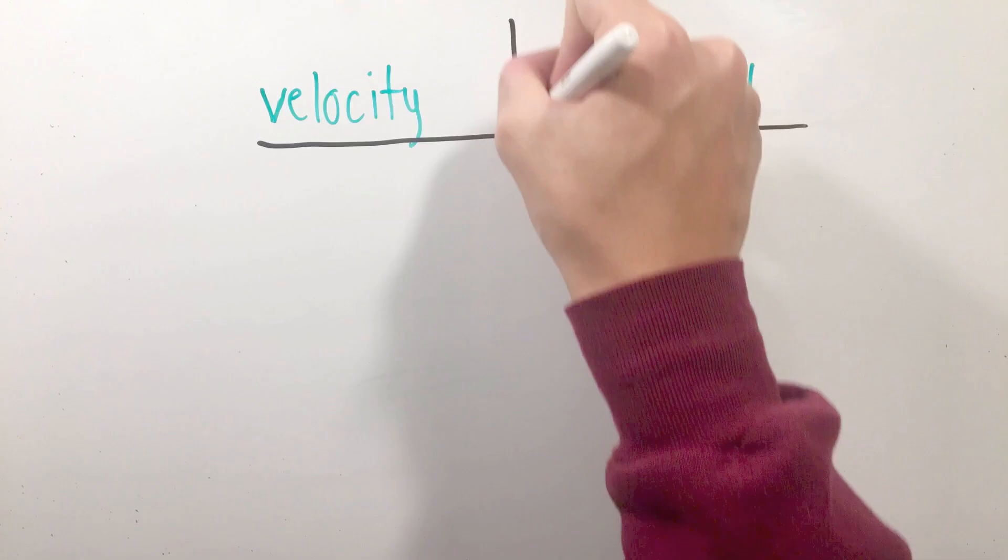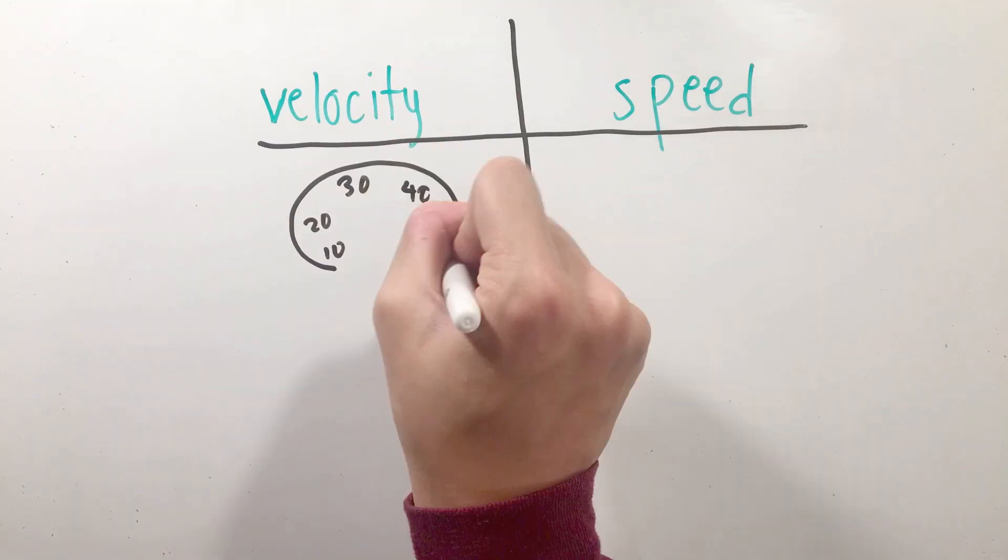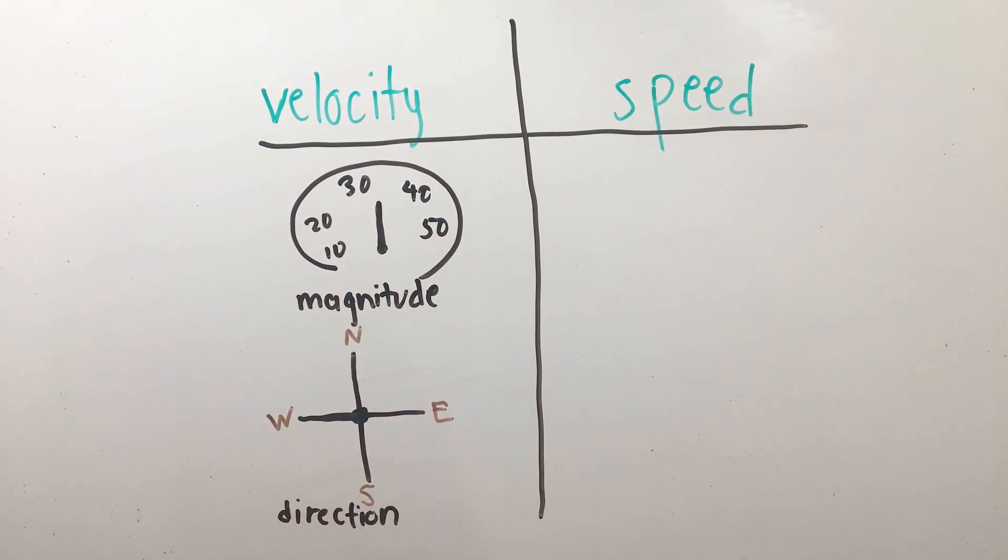Now, like displacement, velocity is also a vector quantity, meaning it describes how fast you're going and where you're going as well.